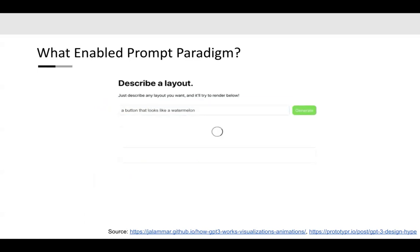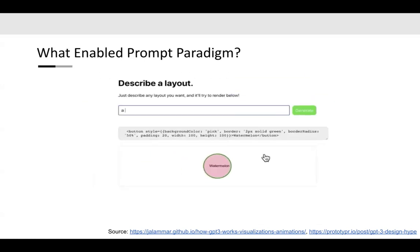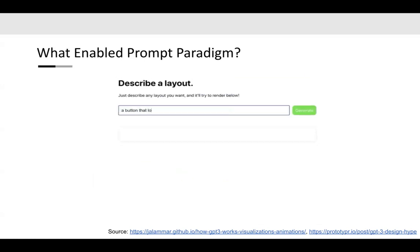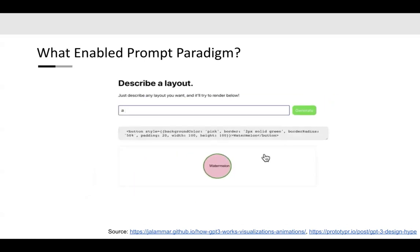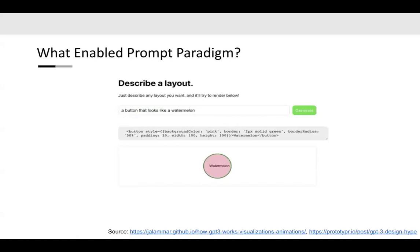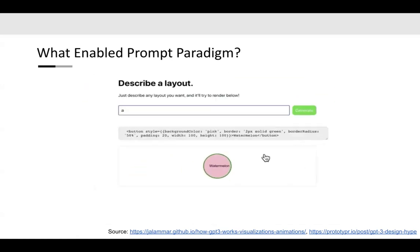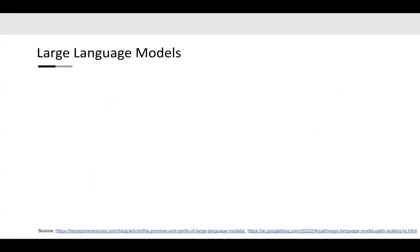From this point, two things were happening: first, prompt engineering — how to make the best possible prompts to steer the model to do a good job on a specific task. Second, researchers were exploring what kind of alignment could make the model better. I'll touch on both of those things.